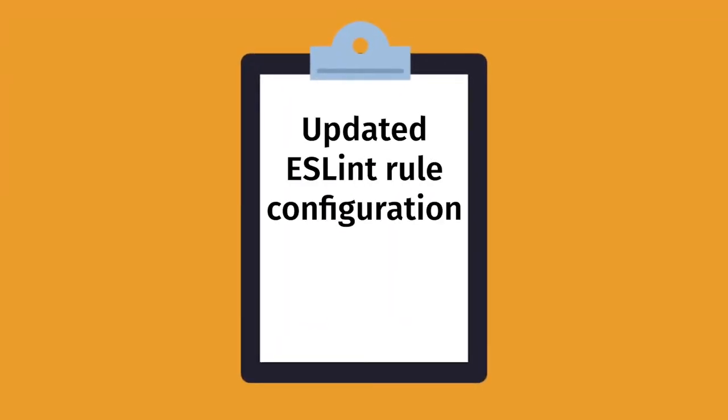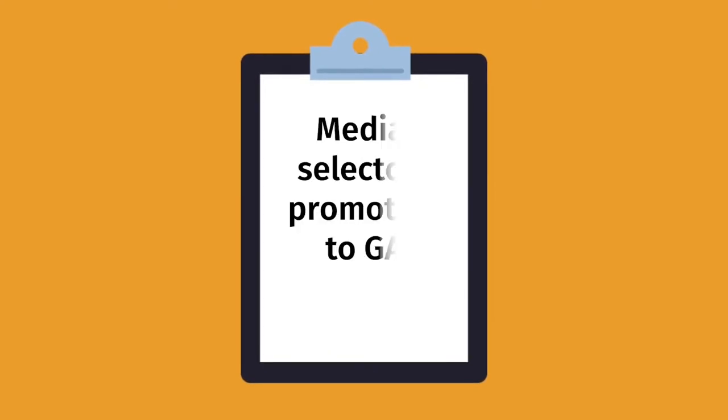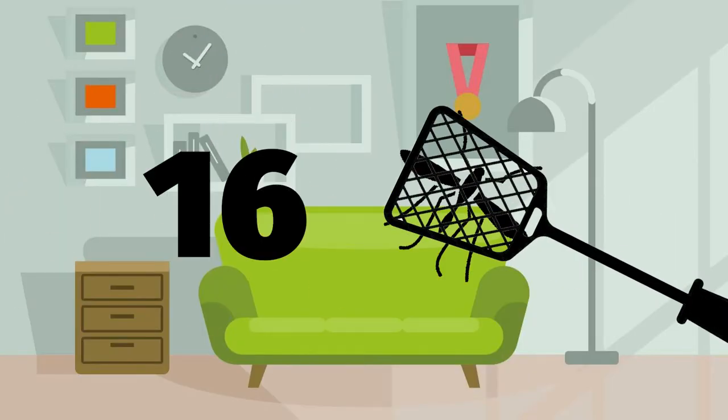In early August, Microsoft released a minor update to the SharePoint Framework with version 1.15.2. This was a relatively minor update that included just a few things: an updated ESLint rule configuration, automatically registering Azure service principals when permission scopes of requests are approved, and two things for adaptive cards. The Quick View cards now support deferred loading, and the media selectors were promoted to generally available. They also squashed 16 issues or bugs, including five that I reported. In this episode, I'm going to go over all these updates and share some additional things I found after spending some time picking apart this release of the SharePoint Framework.